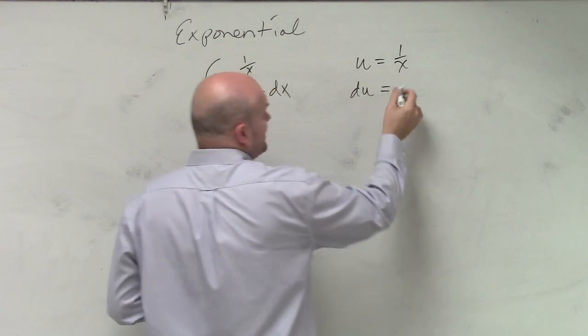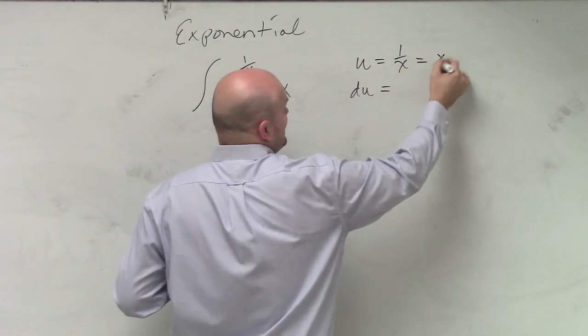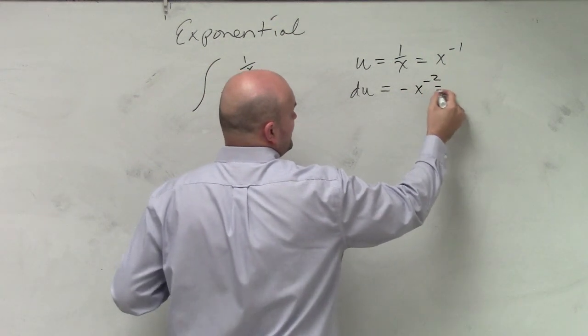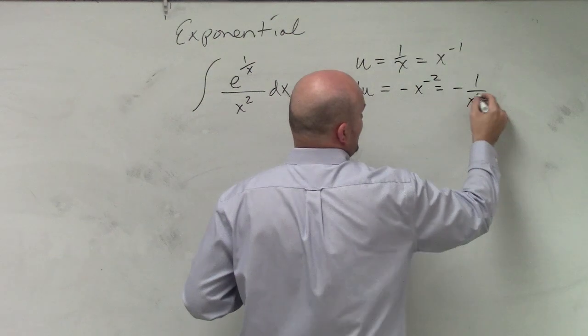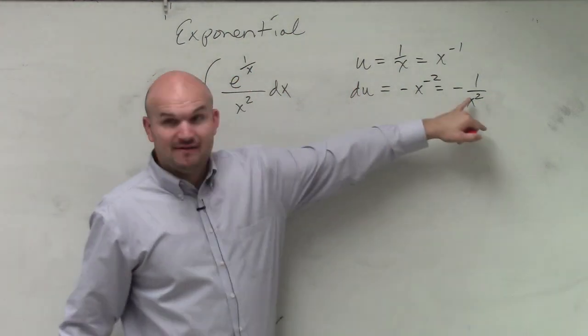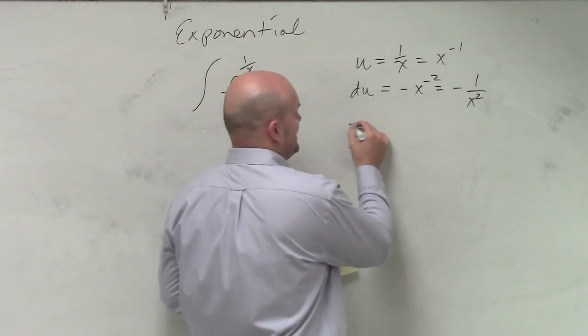...du is going to equal, so that's the same thing as x to the negative 1. So therefore, that's negative x to the negative second, which is equal to negative 1 over x squared, which we have there, except we have that negative. So I need to take the negative out.